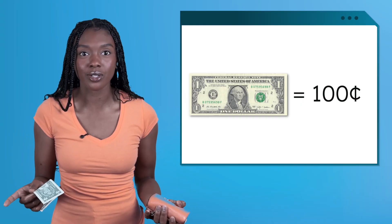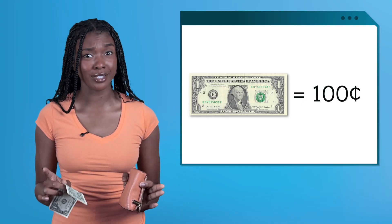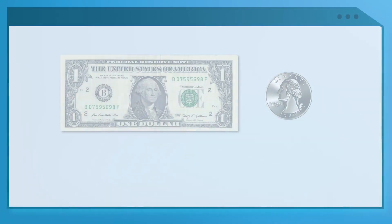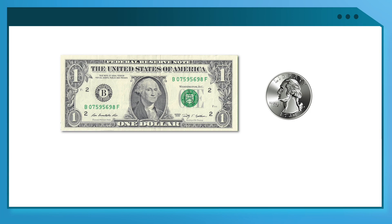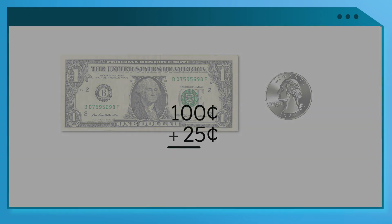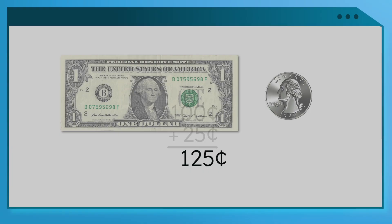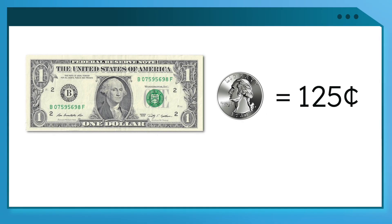Right, 100 cents. So this means one dollar is also equal to 100 cents. This will help us switch between dollars and cents if we need to. Let's make sure we understand this. If we have one dollar and one quarter, how many cents do we have? We know our dollar is equal to 100 cents and our quarter is 25 cents, so we can add 100 to 25. That gives us a total of 125 cents. So one dollar and 25 cents is the same as 125 cents.